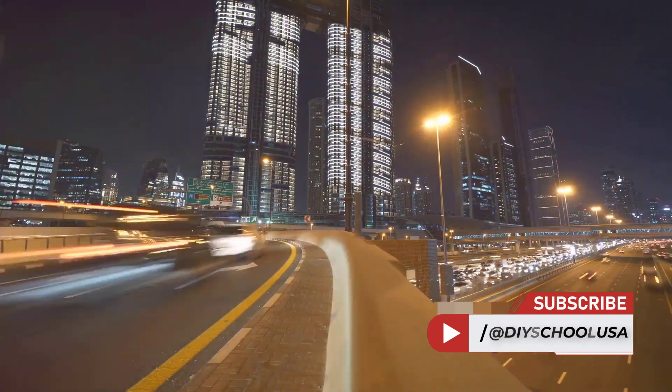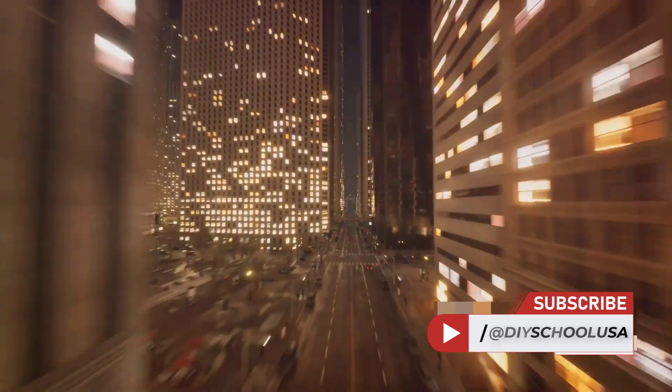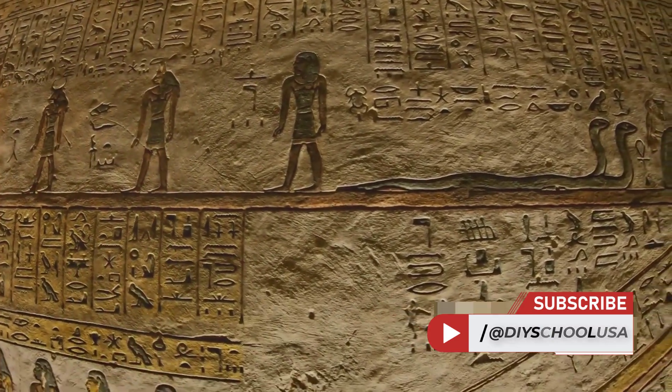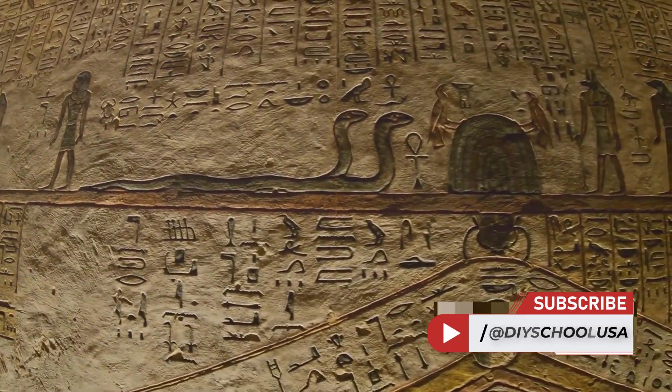From the ticking of our clocks to the compasses that guide our way, their base 60 system continues to shape our understanding of time and space. Indeed, the echoes of the Babylonian number system still resonate in our watches and compasses.